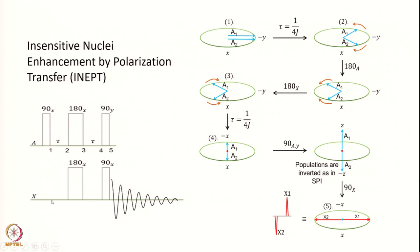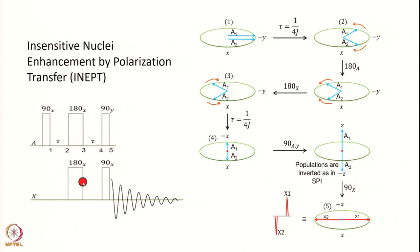The experiment starts like this: you have the A spin and the X spin, where the X spin is the less sensitive one and the A spin is the more sensitive nucleus. Now we apply a hard pulse to A — a hard pulse means it is not selective anymore, so all the transitions of the A spin are excited. We apply a 90°X pulse to the A spin, wait for a period τ, then apply simultaneous 180° pulses to both the A spin and the X spin. This is particularly easy if A is a proton and X is carbon, since they are on two different channels.